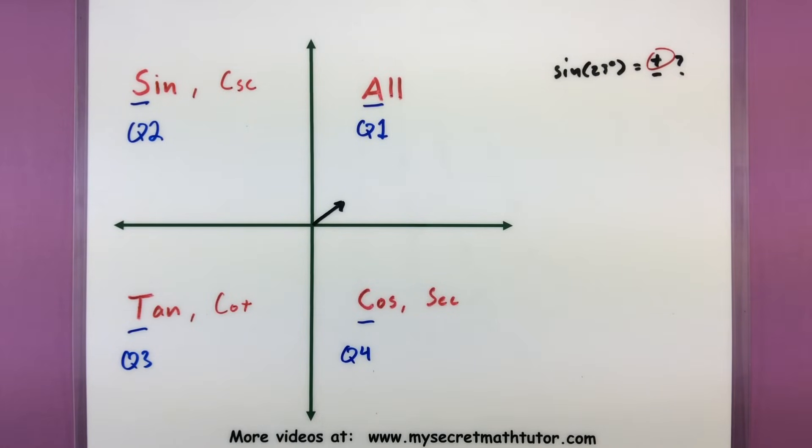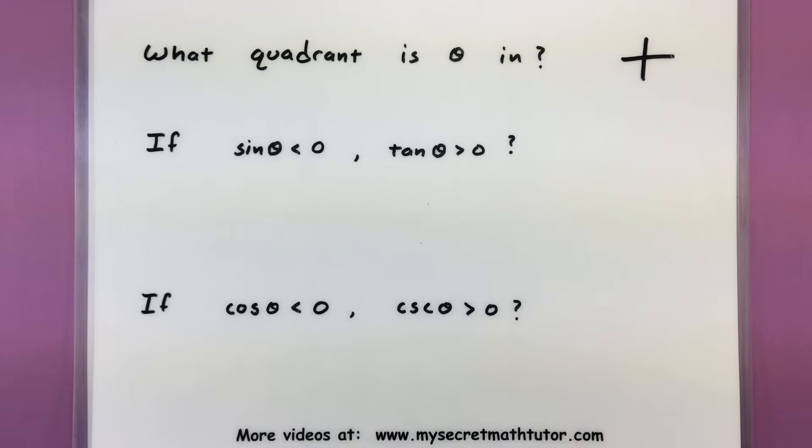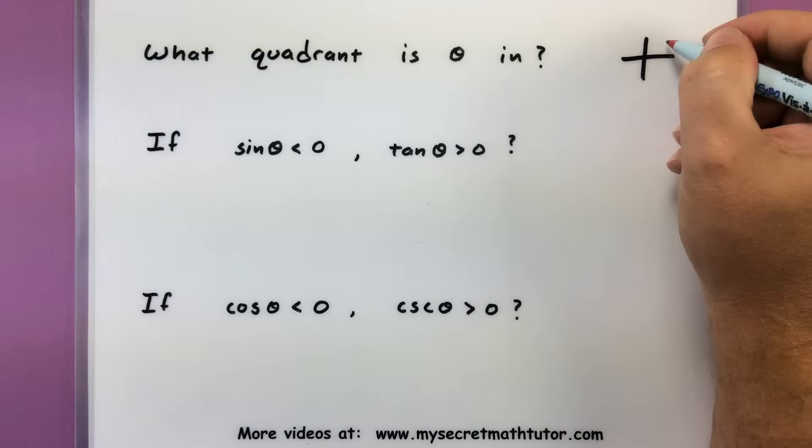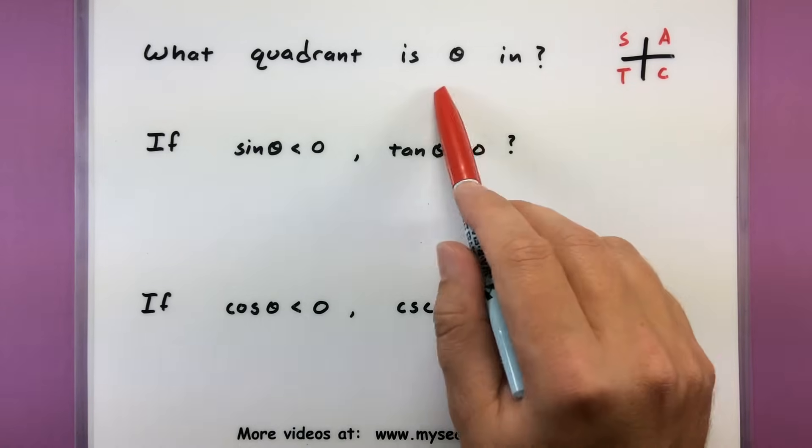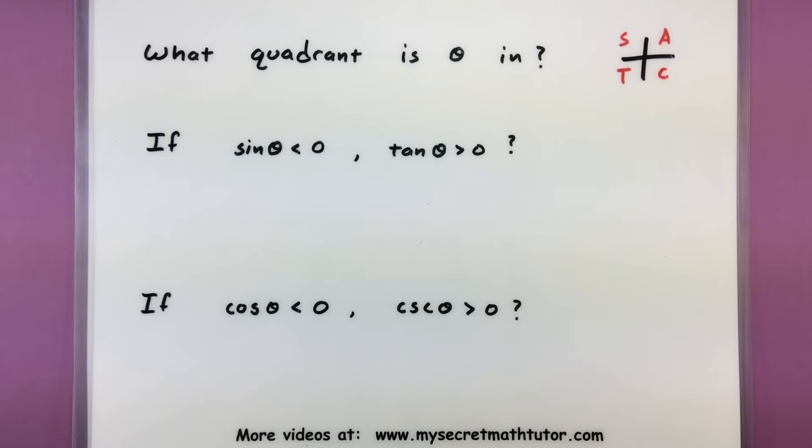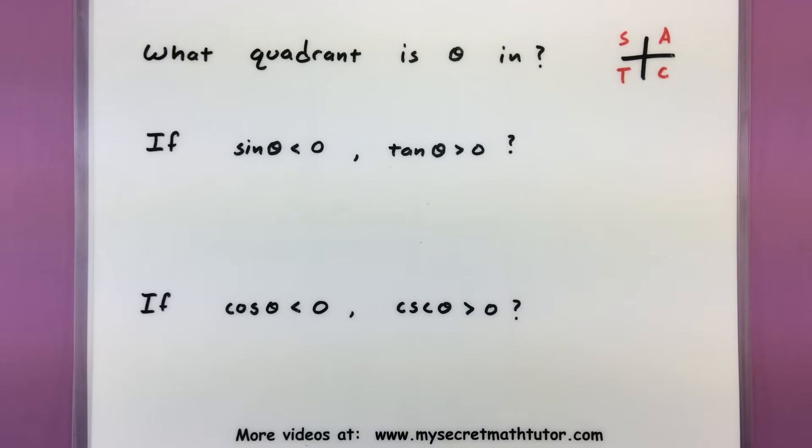Now let's take this one step further and actually try an example. Just to help us out, I'm going to draw this in the corner, which is something you can do if you're taking a quick test - quickly sketch this out. All students take calculus. The goal with this problem is to figure out what quadrant our angle has ended up in. We know that if I plug my angle into sine, it's negative, and if I plug it into tangent, it's positive. So where did that angle go?